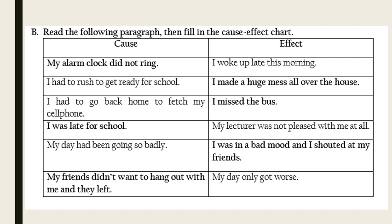Cause given: my day had been going so badly — effect: I was in a bad mood and I shouted at my friend. The last effect given: my day only got worse — because my friends did not want to hang out with me and they left. That's how we've finished the skill part.